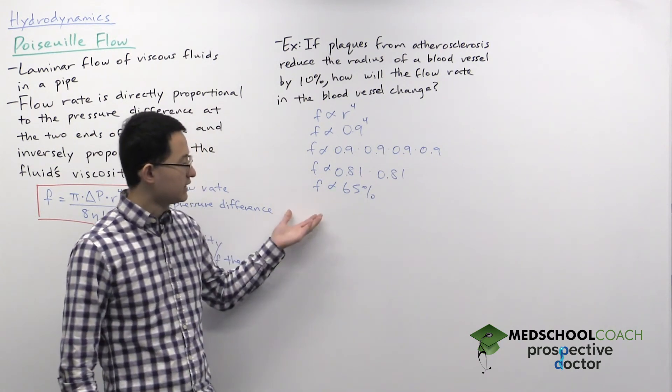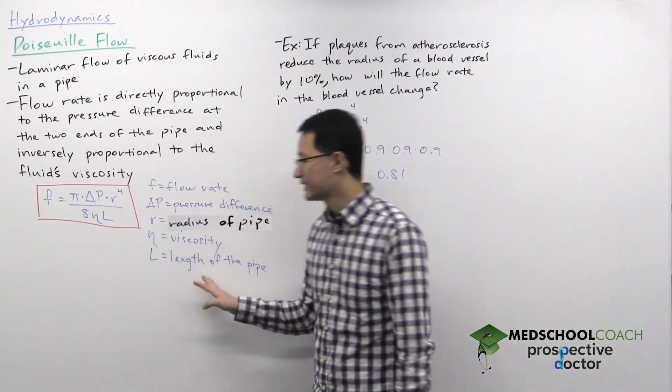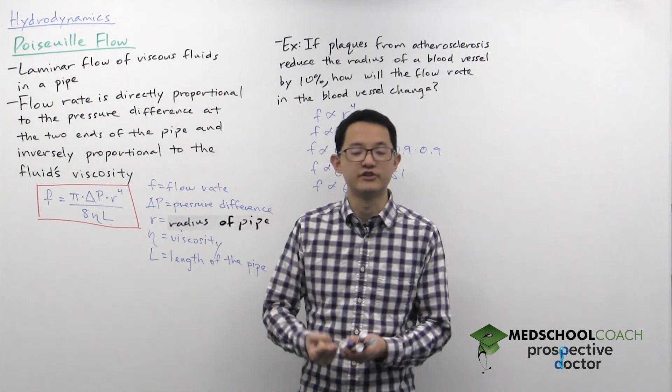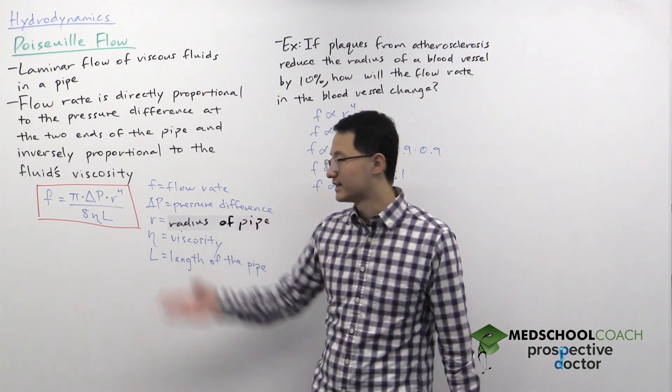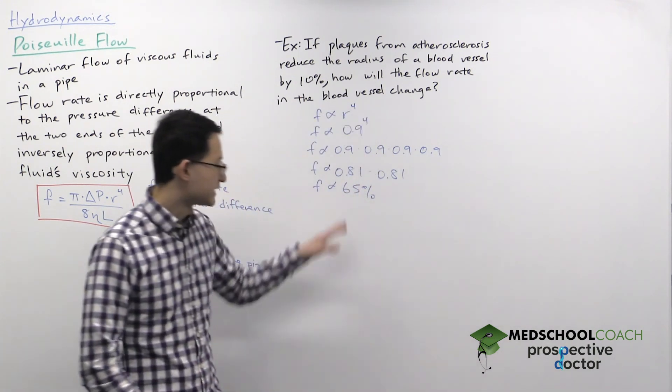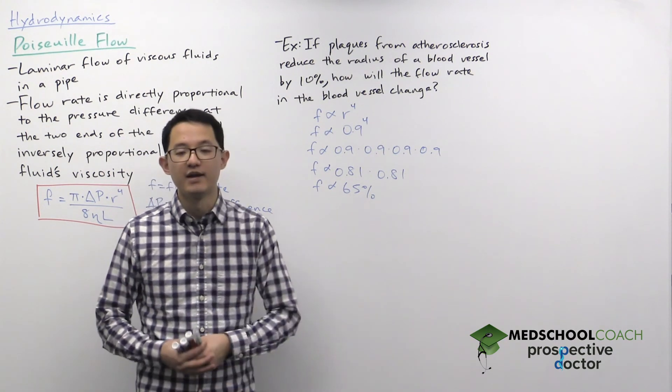If you think about it, if the heart wants to bring the flow rate back to normal, one thing that it could do is increase the pressure difference. So the heart can work harder to pump blood, but that of course is not very good because then this is going to result in high blood pressure because you would have to have a significant increase in the pressure in order to bring the flow rate back to normal.